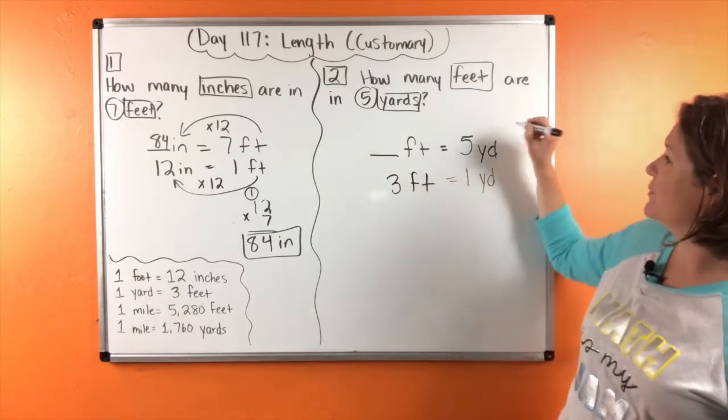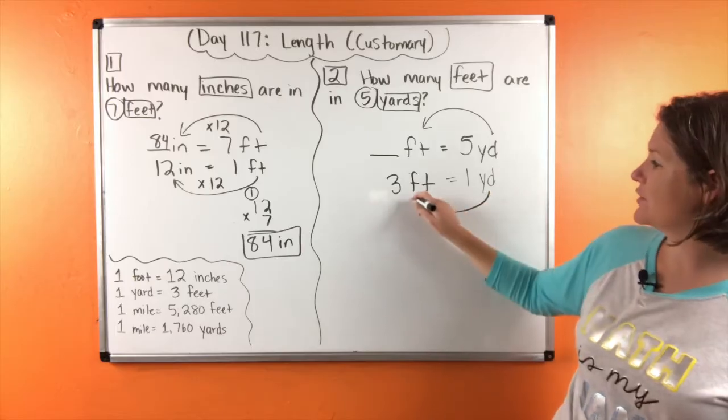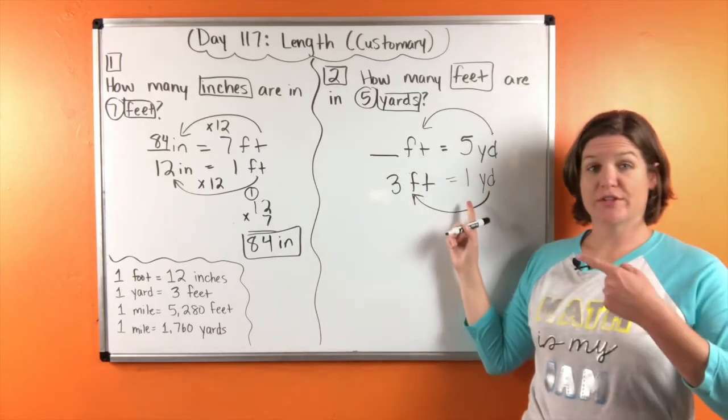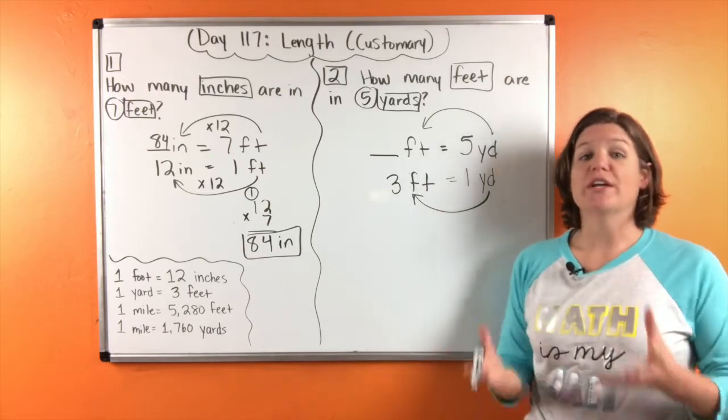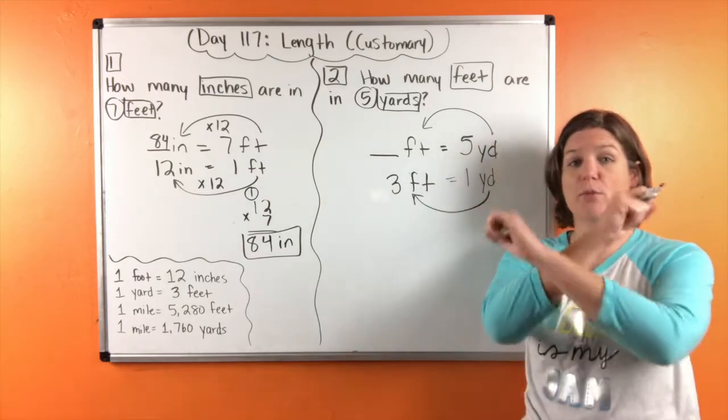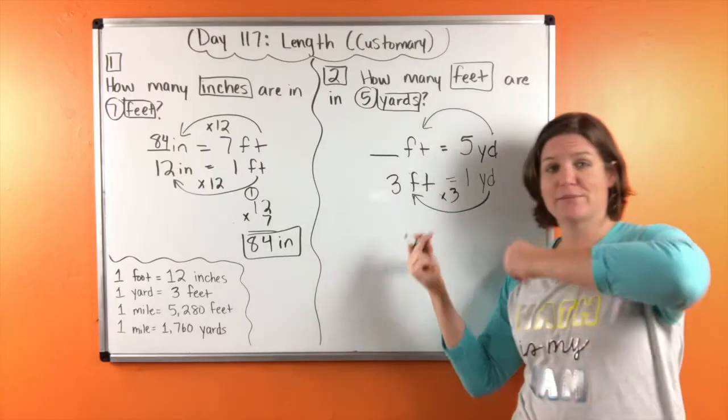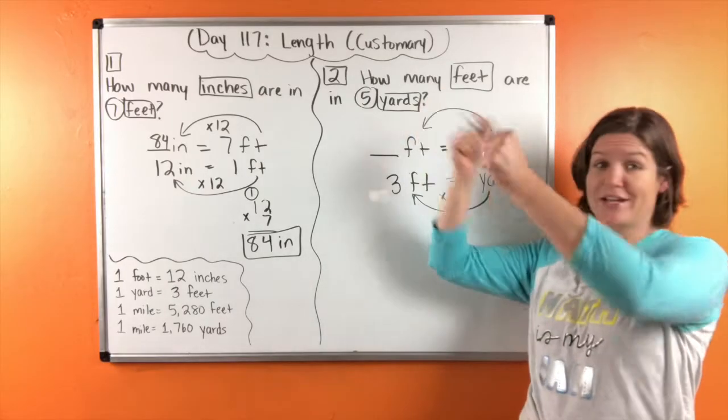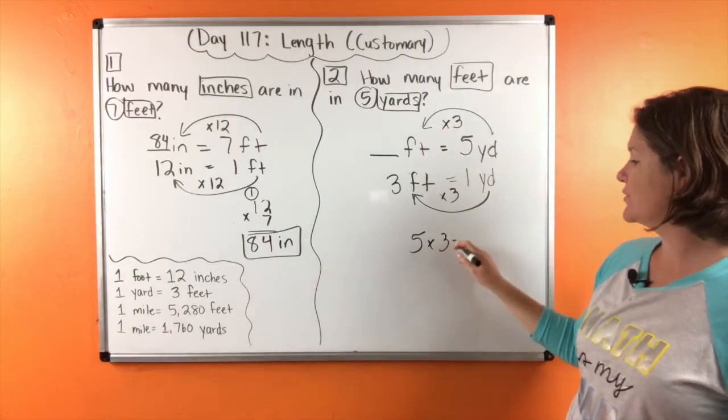So we're converting from yards to feet. So when we go from one to three, we are increasing which means that we are multiplying by three. Three times three on the bottom times three on the top. So five times three equals what?